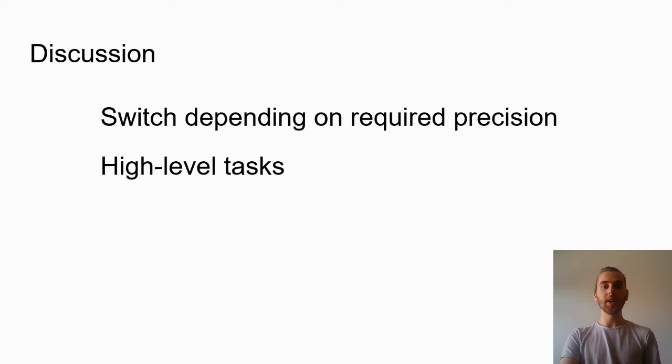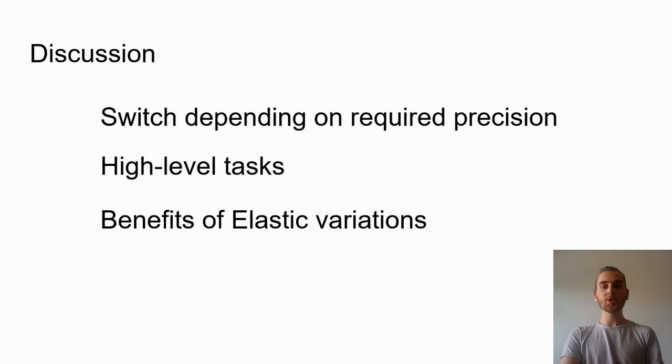We saw that different techniques are suited to different types of tasks. This has the implication that in a rich system, users will need to fluidly switch between techniques depending on their goal. We plan to study this transition in a set of high-level tasks, such as network analysis, that will go beyond path following. Also, our results show elastic variations perform worse than their basic counterparts. Elastic variations can, however, be interesting when we want to compare the selected current path with other locations on the network, since we can pull the path with us.